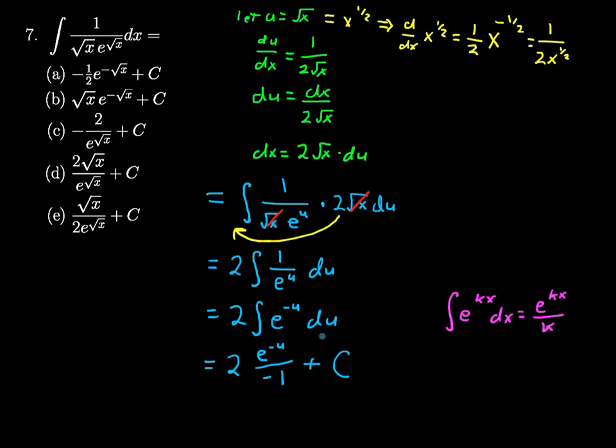And now, a few things to tidy up. First thing: 2 divided by negative 1, that's negative 2. Second thing: e to the negative u, let's put that as 1 divided by e to the u.